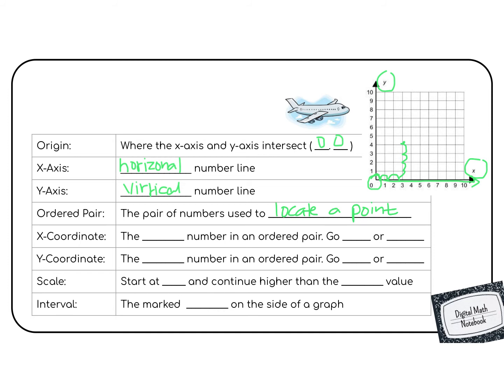The x-coordinate is the first number in an ordered pair, and it goes left or right. The second number in an ordered pair is the y-coordinate, and it goes up or down.